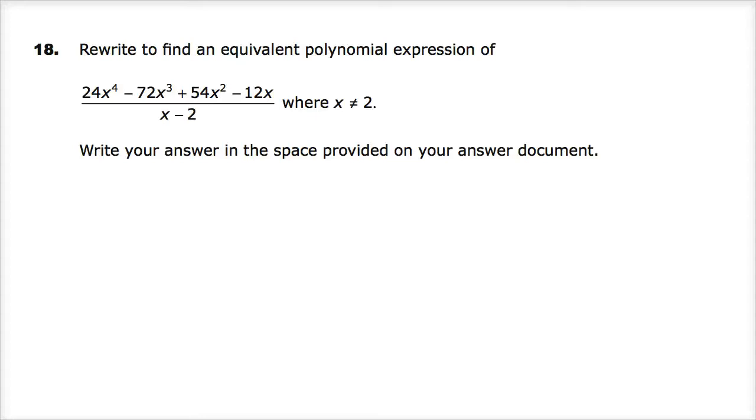Welcome, this is the Integrated Math 3 Practice Test 410 Ready. Question number 18, we are in subpart 2, so calculators are allowed, that's a bonus. Rewrite to find an equivalent polynomial expression of the quantity 24x to the 4th minus 72x cubed plus 54x squared minus 12x over x minus 2, where x is not equal to 2.